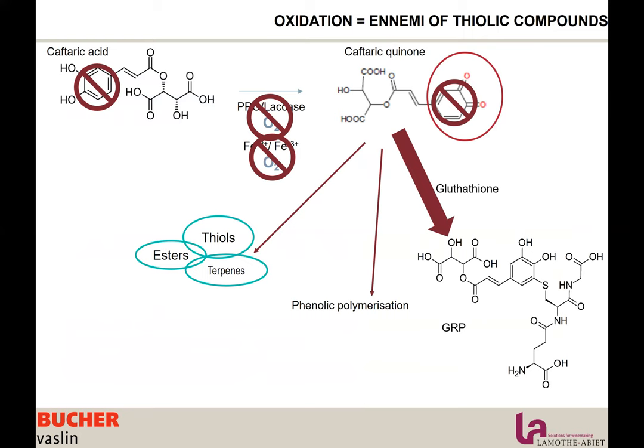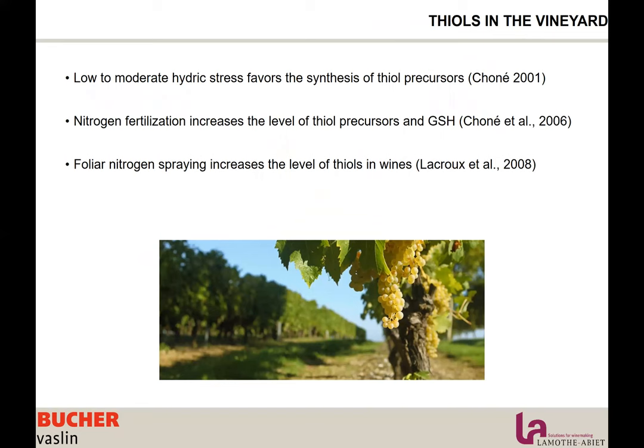We will talk about protection from oxidation throughout the presentation, but oxygen is always an enemy for thiolic compounds. Now let's talk about the process and how we can optimize thiolic compounds and their expression through winemaking, starting with the vineyard. A low to moderate hydric stress is going to favor the synthesis of thiolic precursors. Also, nitrogen fertilization and foliar nitrogen spraying have the same effect, and there is a lot of work that can be done in the vineyard to increase the amount of precursors in the grapes.